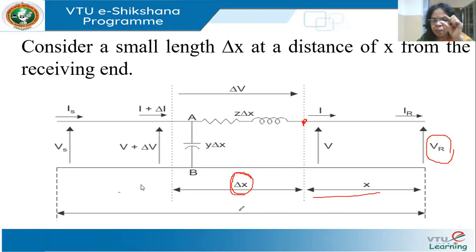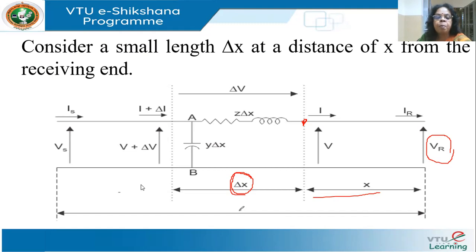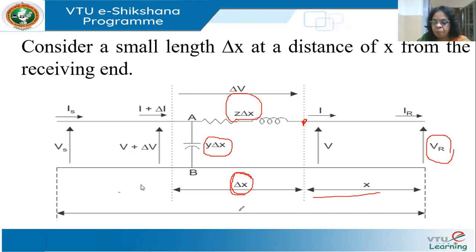Since delta X is small, I can lump the impedance and admittance, because it is only a small distance of the line I am considering. The impedance is Z·deltaX, where Z is the impedance per unit length. Z·deltaX is the impedance and Y·deltaX is the admittance for that small section. The drop in the line is delta V.